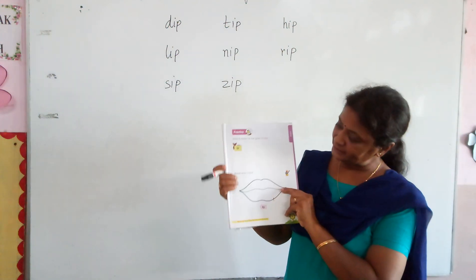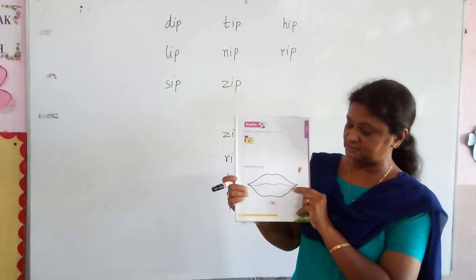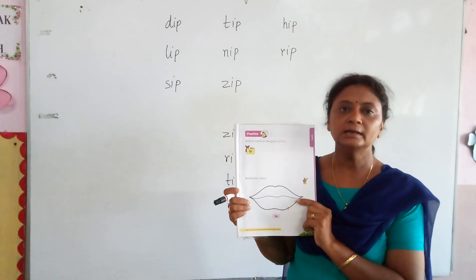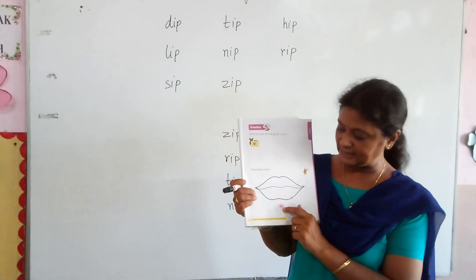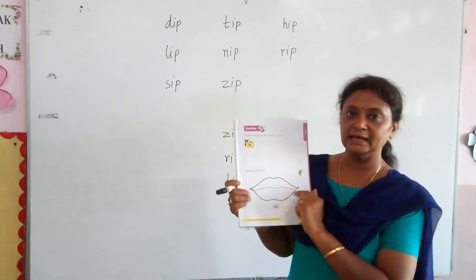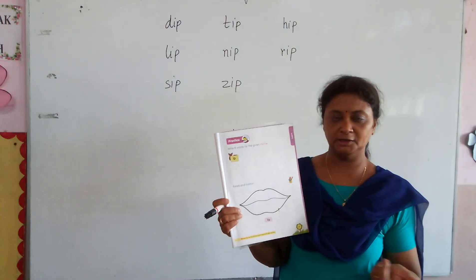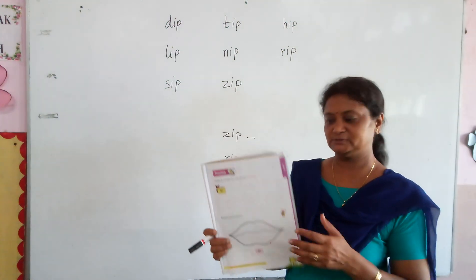The second question is read and color. This is a picture of what? Lips. So this is a lip — color it according to whatever picture color you want for the lips.